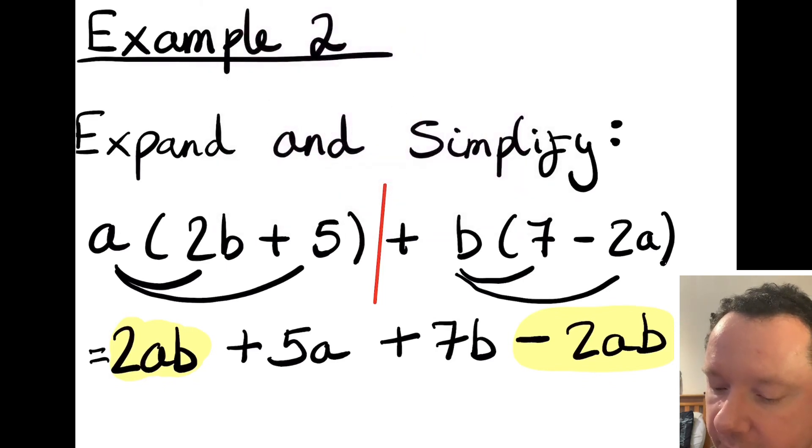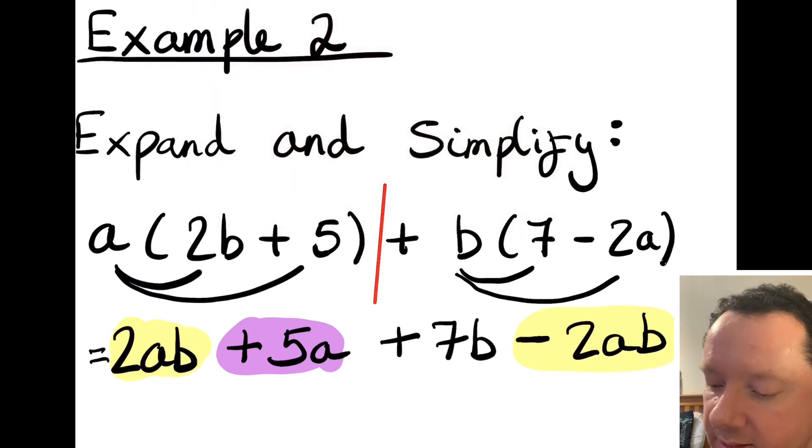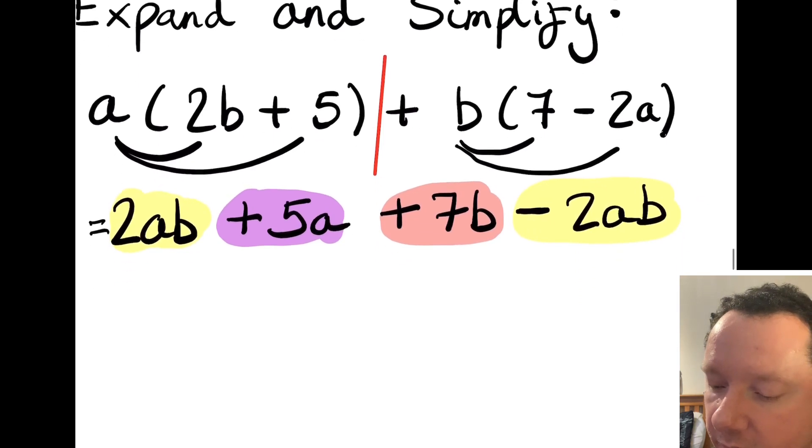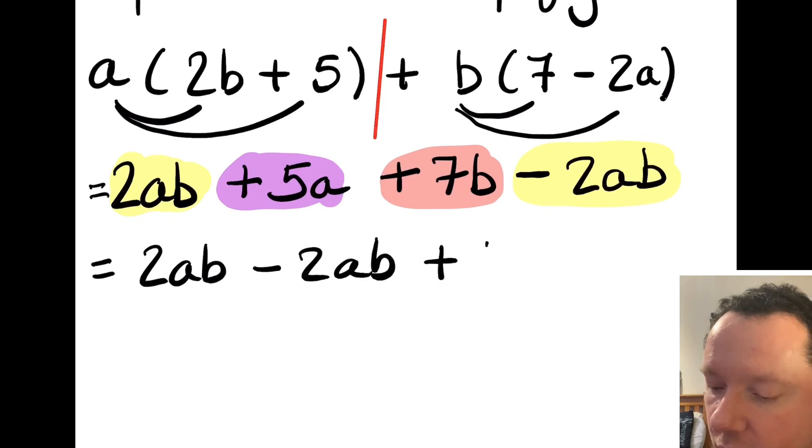And now we simplify it the same way we always do. So getting my highlighter. The first term is 2ab, so I'm looking for another term with a and b in it as well. Not that, not 7b, minus 2ab is my next one. Now go ahead and do the same. The next term that is there is plus 5a. I look along and see if there's anything else with just a's. There is nothing. You really don't have to then do this, but the last term is plus 7b. You can see here that again, there's nothing else the same as it. That's already simplified. So the only things I have to simplify are 2ab minus 2ab. So if I rewrite it, I've got 2ab minus 2ab. Then I've still got plus 5a. I've still got 7b. So it should be obvious that 2ab minus 2ab is nothing, so I don't have to write anything. So the final answer is just 5a plus 7b.